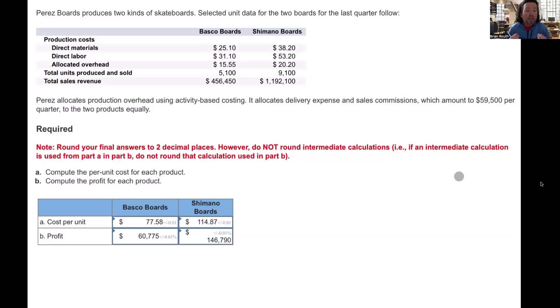So compute the per unit cost for each product. Well, we know that direct materials plus direct labor plus overhead makes up the cost of a product. So let's see what that looks like. So we have the Basco and we have the Shimano boards. We need our direct materials cost, our direct labor cost, and our overhead cost.